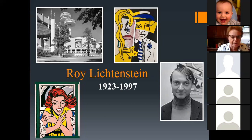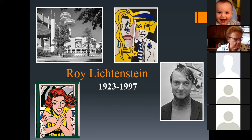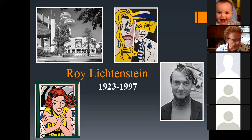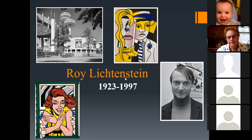Roy Fox Lichtenstein was born in New York City to a family of German Jewish background. He grew up on the Upper West Side of Manhattan; his father Milton was a real estate broker, his mother Beatrice was a homemaker, and he had a little sister Renee. As a child, he spent a lot of time listening to science fiction radio programs, visiting the American Museum of Natural History, building model airplanes, and drawing. As a teenager he started to take watercolor classes at Parsons, and in high school he even started a jazz band — a real art personality. An avid jazz fan, he would go to the Apollo Theater and often drew pictures of the musicians as they were playing their instruments.